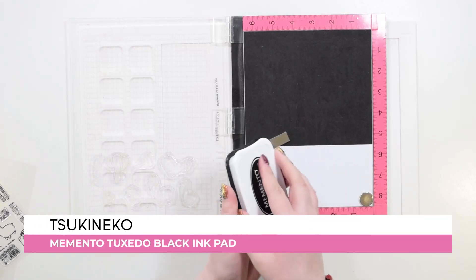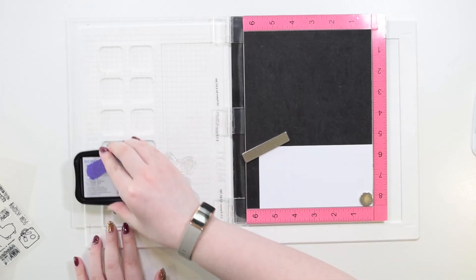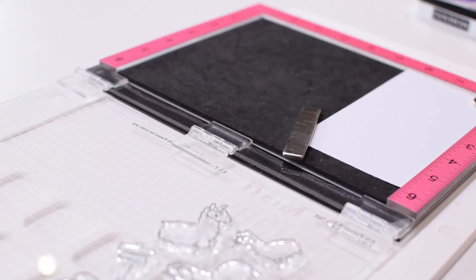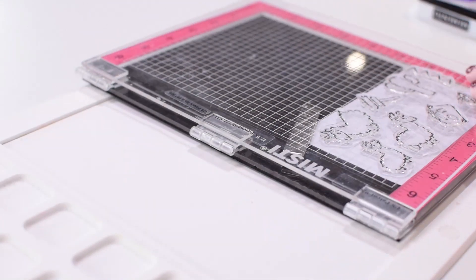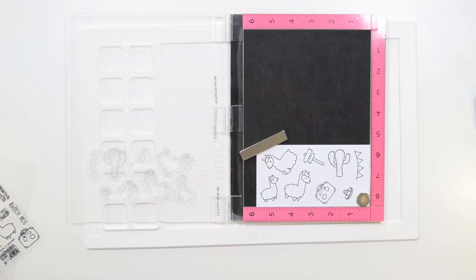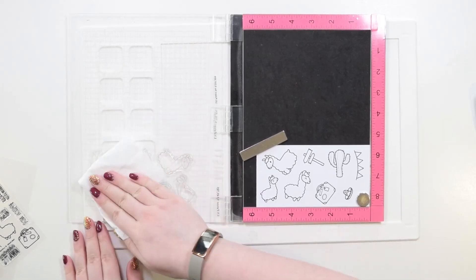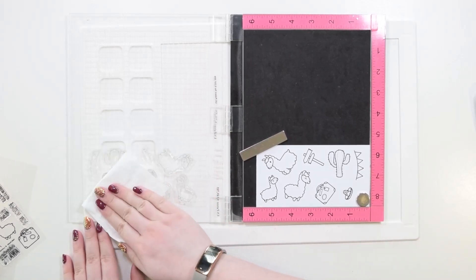And I'm using Memento Tuxedo Black ink to make sure these lines are really bold and solid. Now I'm gonna stamp these a couple of times just to make sure the lines are solid and everyone looks super neat and super cute. Don't forget a really simple way to clean your stamps off when you're busy crafting is just by using a baby wipe.